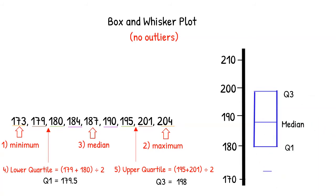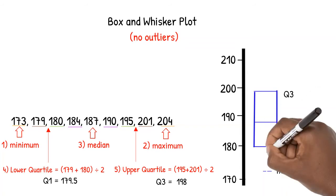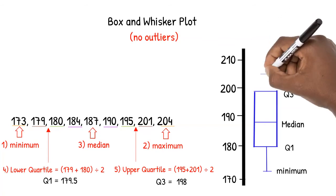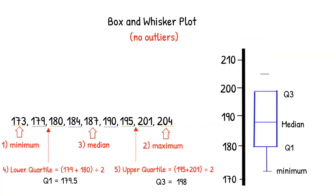Now, we put a smaller line at 173, the minimum. This is the end point of our box's first whisker. We put another small horizontal line at 204, the maximum. Now we can draw our second whisker. It is important to note that if we had outliers, this step would be slightly different. We will discuss an additional step that we would need to take in a future video.